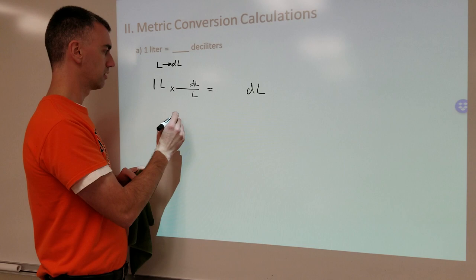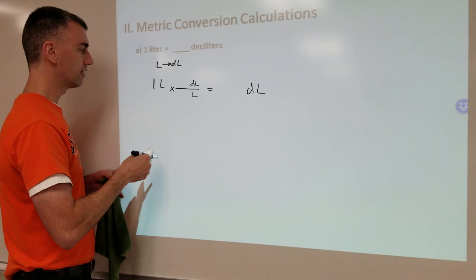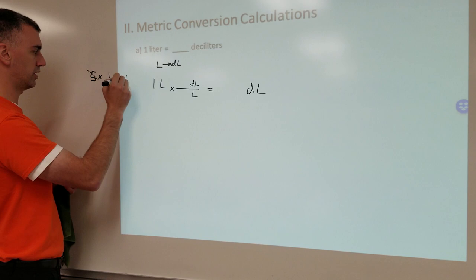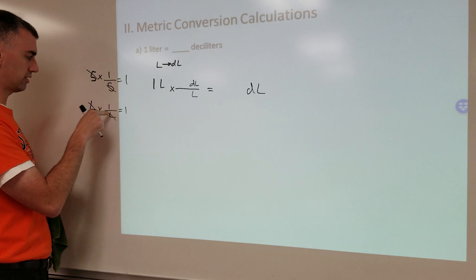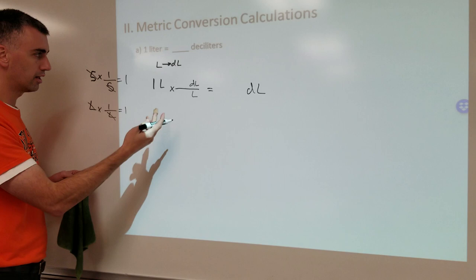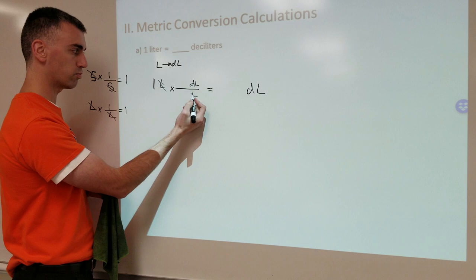Liters goes on the bottom. Why? Because liters goes on bottom so we can cancel liters here; deciliters goes on top so it can be in the end. Units can be treated like numbers — if you take five times one over five, five cancels five to give one. Same thing with liters: liters times one over liters cancels to just leave one. So we put it this way because liters is not part of the final answer, only deciliters is. That's why I put liters on the bottom so it can cancel, and deciliters on top so it's in the final answer.